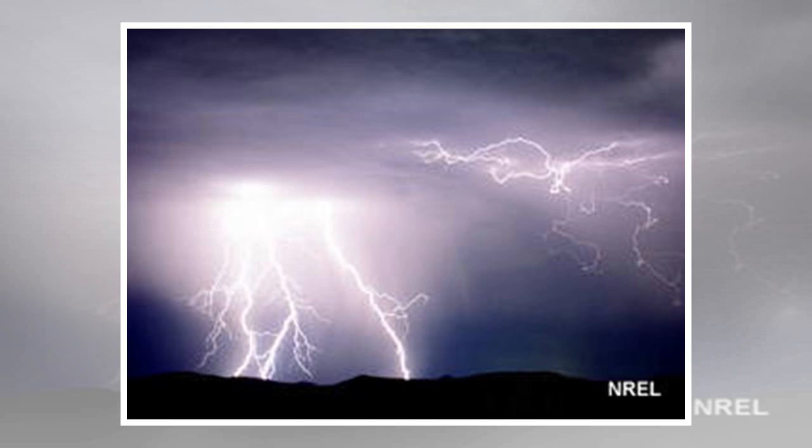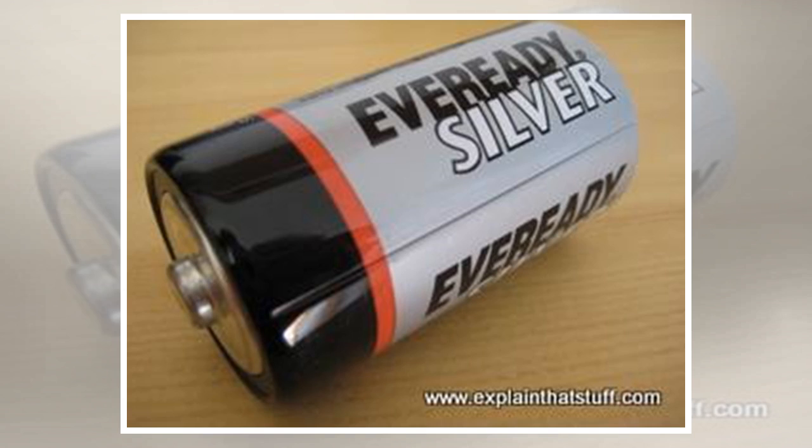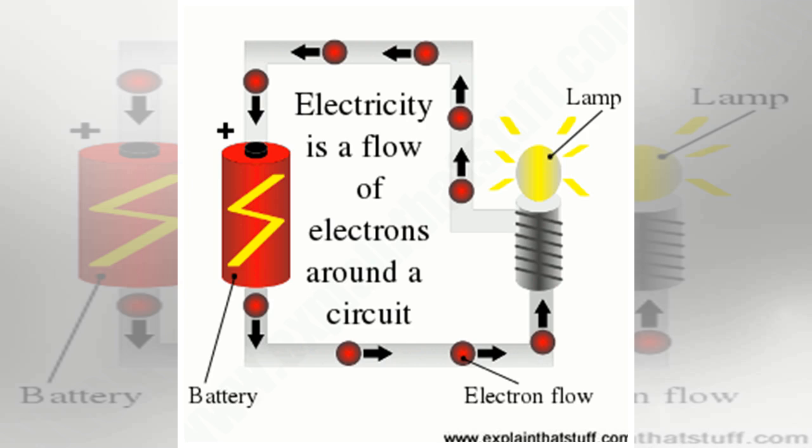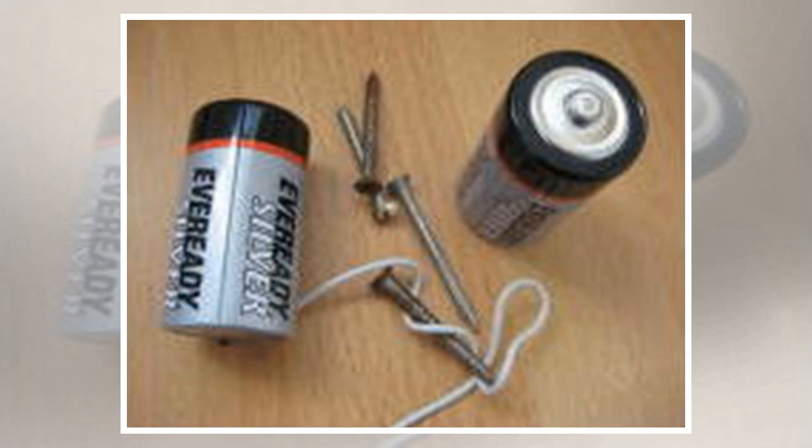The electric generators used in power plants work in exactly the same way, only on a much bigger scale. Instead of being powered by someone's legs pedaling furiously, these large generators are driven by steam. The steam is made by burning fuels or by nuclear reactions. Power plants can make enormous amounts of electricity, but they waste quite a lot of the energy they produce. The energy has to flow from the plant, where it is made, to the homes, offices, and factories where it is used down many miles of electric power cable. Making electricity in a power plant and delivering it to a distant building can waste up to two-thirds of the energy that was originally present in the fuel.